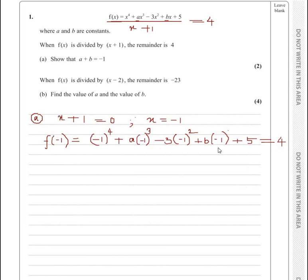So let us solve this given equation. (-1)^4 is 1, a × (-1)^3 gives you -a, then this gives you -3, then -b + 5 = 4. Further solving, we get 1 - 3 is -2, -2 + 5 is 3. So 3 - a - b = 4.